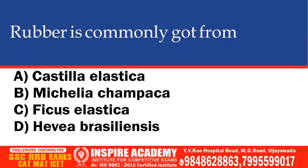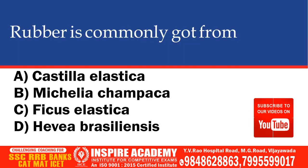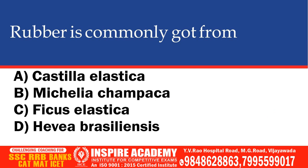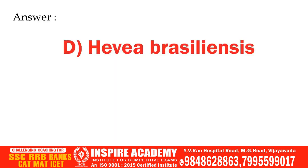Rubber is commonly got from which of the following? Options: Castilla elastica, Michelia champaca, Ficus elastica, Hevea brasiliensis. The correct option is Hevea brasiliensis.